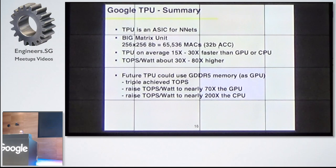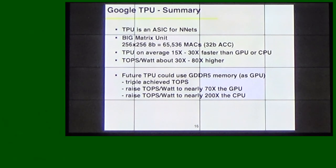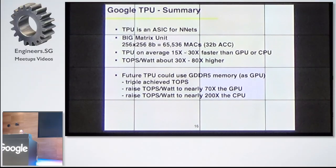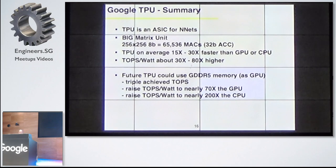In summary, the TPU is really an ASIC — a very specifically designed chip for tensor operations. It's really a big matrix unit, 256 by 256. What we have to remember is that this is 8-bit multiplication, not floating-point like a GPU or CPU. On average, it is 15 to 30 times faster than a GPU or CPU, and it has a teraflop per watt about 30 to 80 times higher. They also mention they are only using DDR3, while GPUs these days are already using DDR5, which means they could triple the teraflop-per-second performance and get even more performance out of this chip.